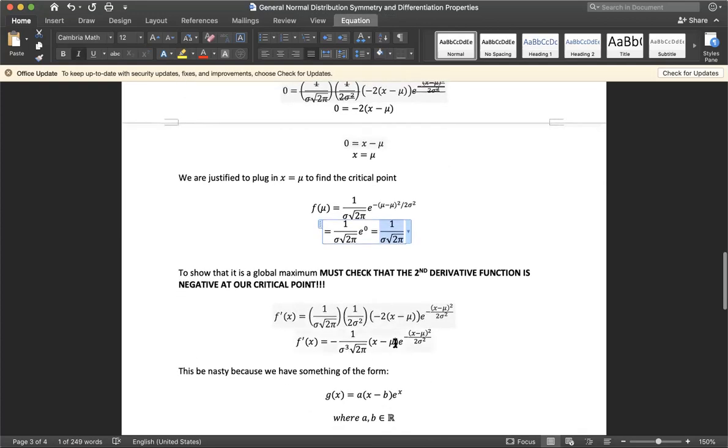To show that it is a local maximum, we have to show that the second derivative at that point, the second derivative function at x equals mu, is negative.